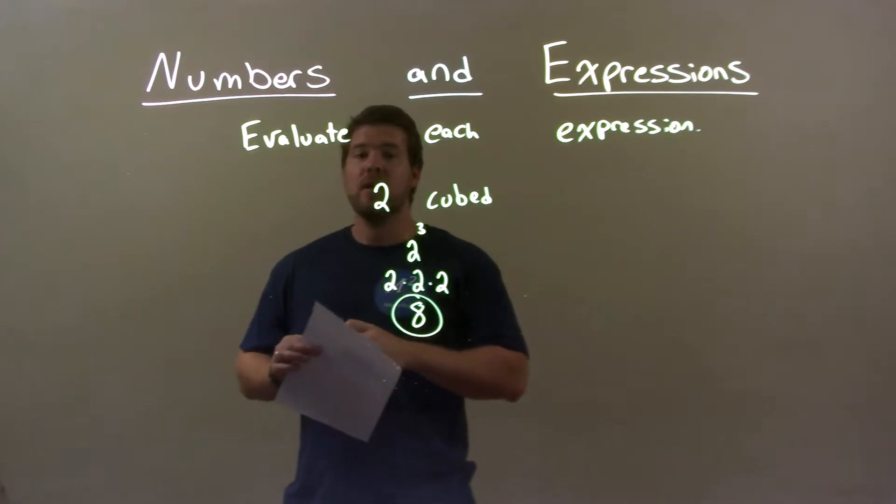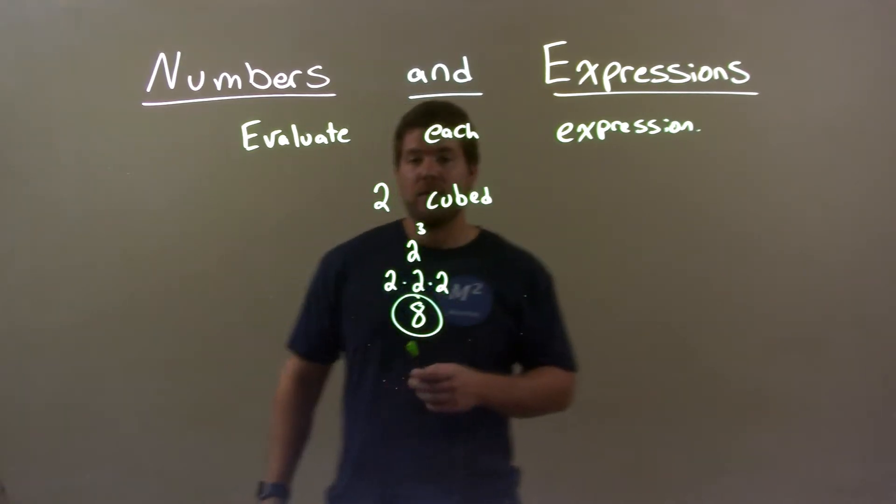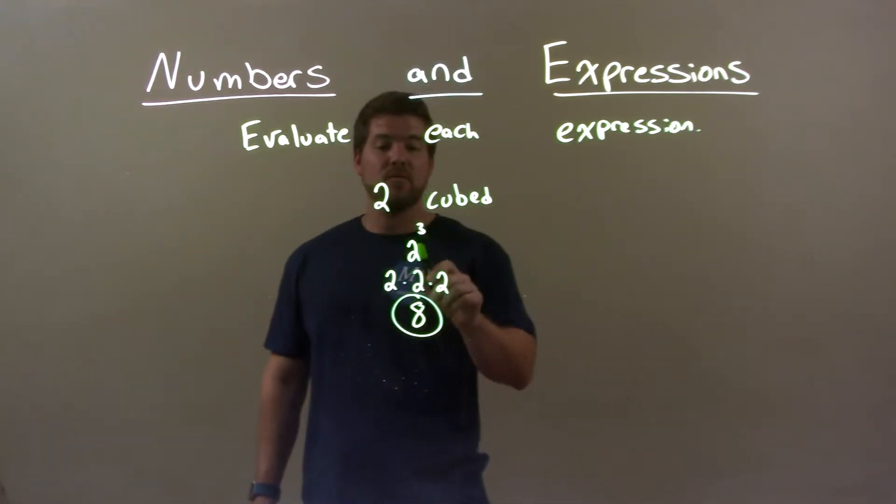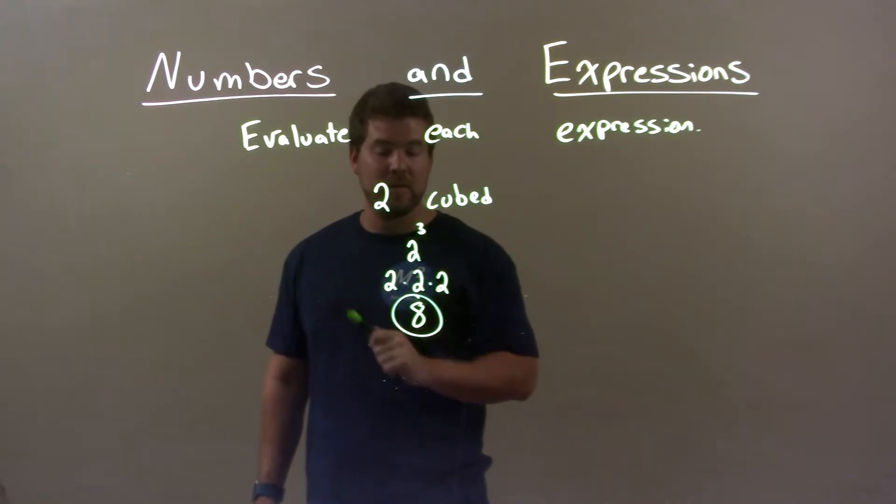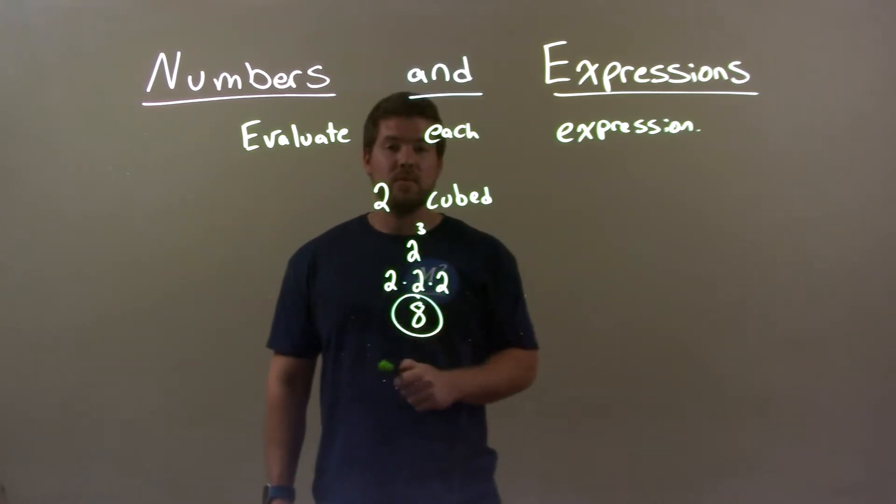So quick recap. We're given 2 cubed, and we can evaluate this. 2 cubed we wrote as 2 to the 3rd power—that's really what it stands for. Then 2 to the 3rd power is 2 times 2 times 2, and we know 2 times 2 times 2 is 8, right? 2 times 2 is 4, and then 4 times 2 is 8. So 8 here, again, is our final answer.